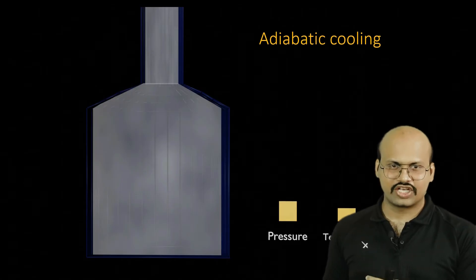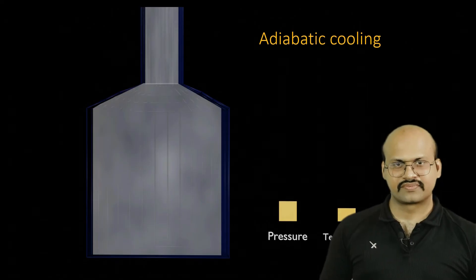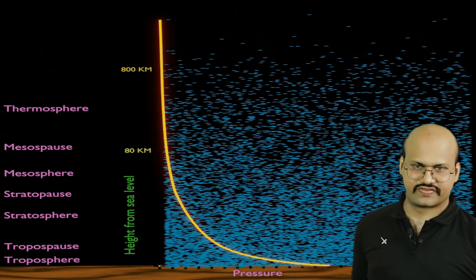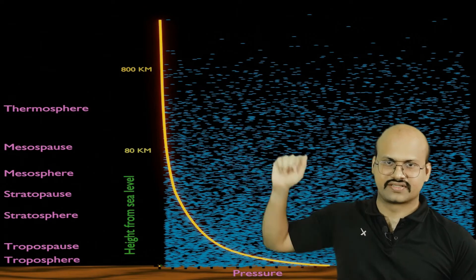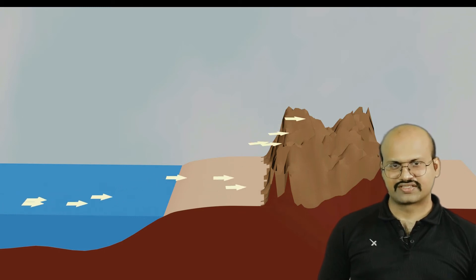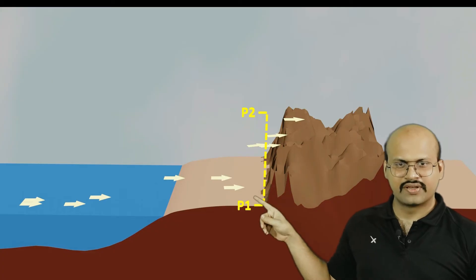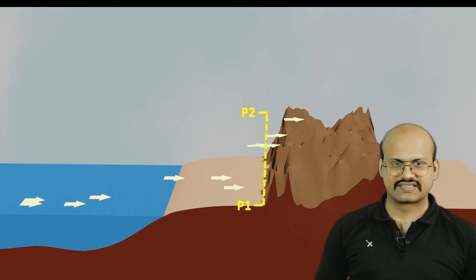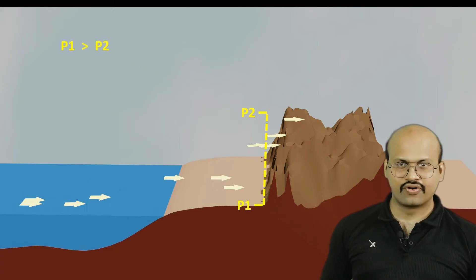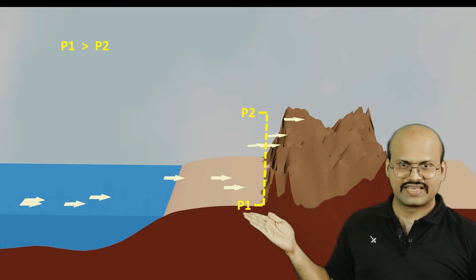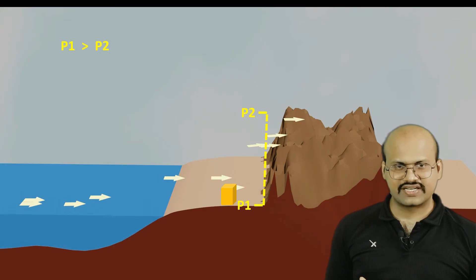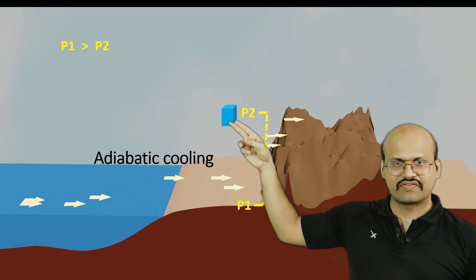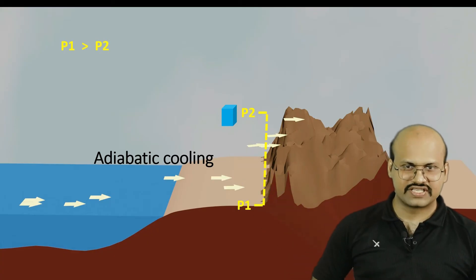In our atmosphere, pressure constantly decreases as we move vertically upward — there is a uniform decrease in pressure with altitude. If we consider a mountain range, the pressure at its base is P1 and at the peak is P2, where P1 is greater than P2. So if we consider a block of air mass at the base and it rises to the peak, its temperature will decrease because the pressure has decreased — this is adiabatic cooling.